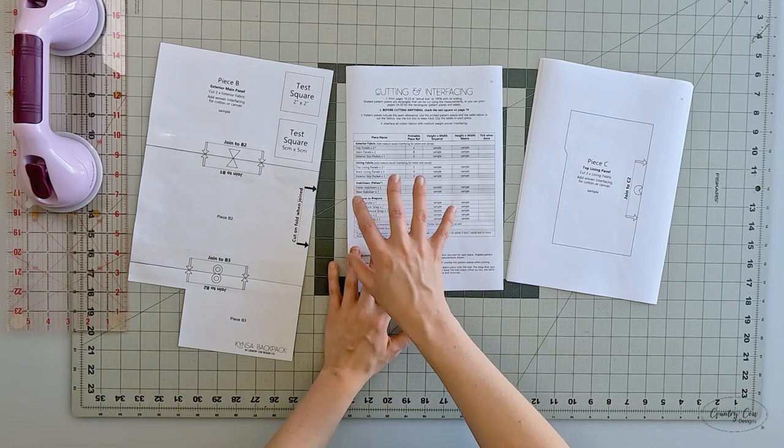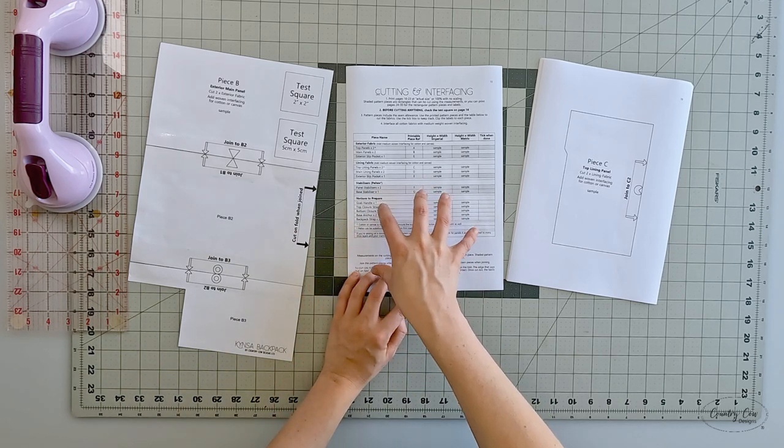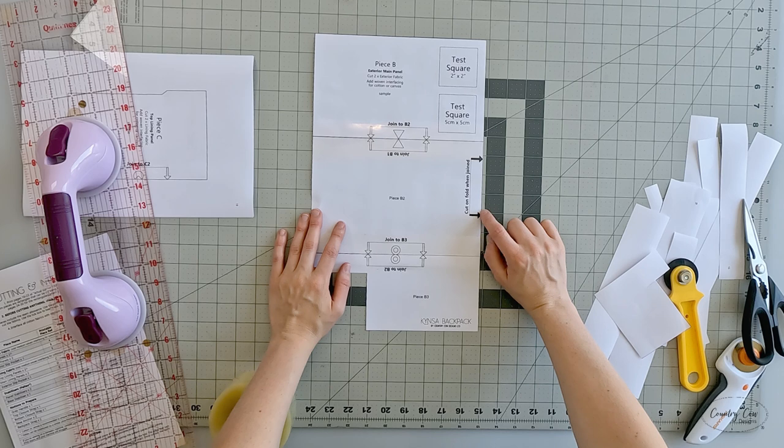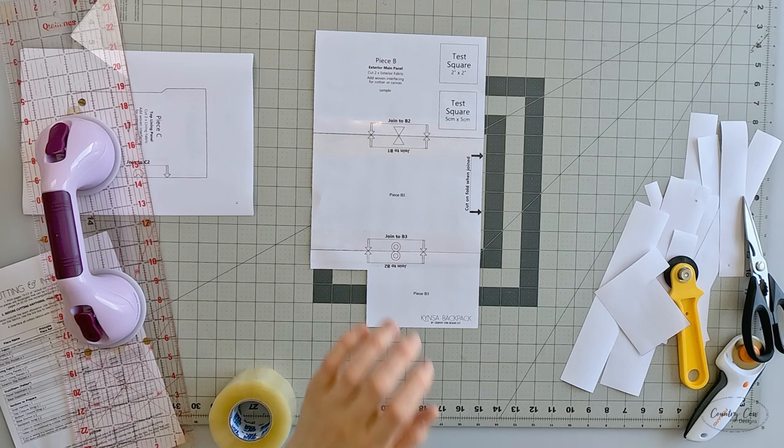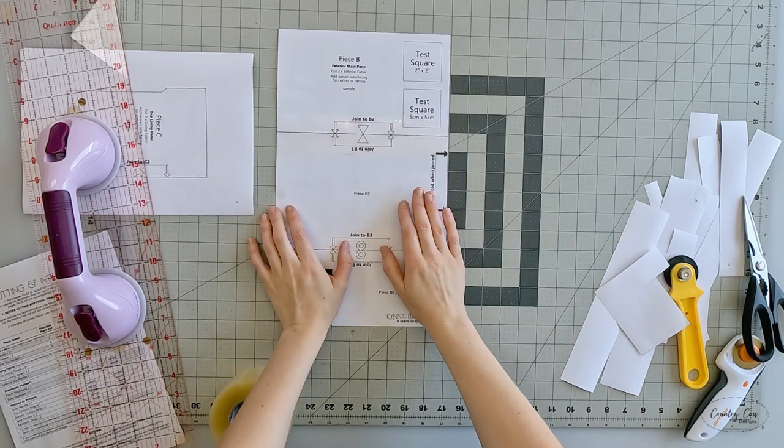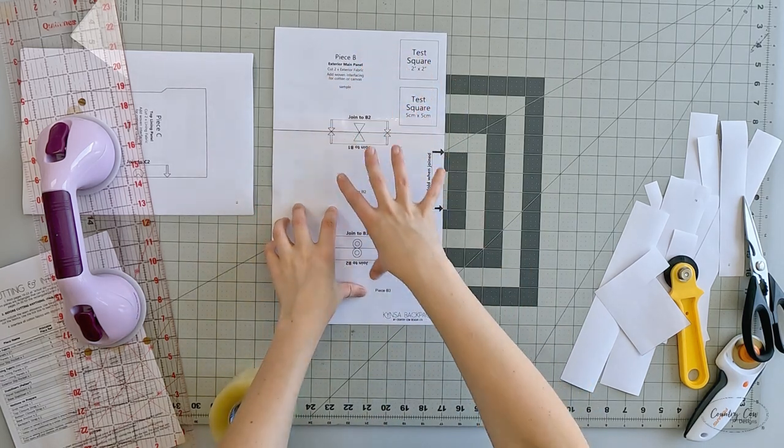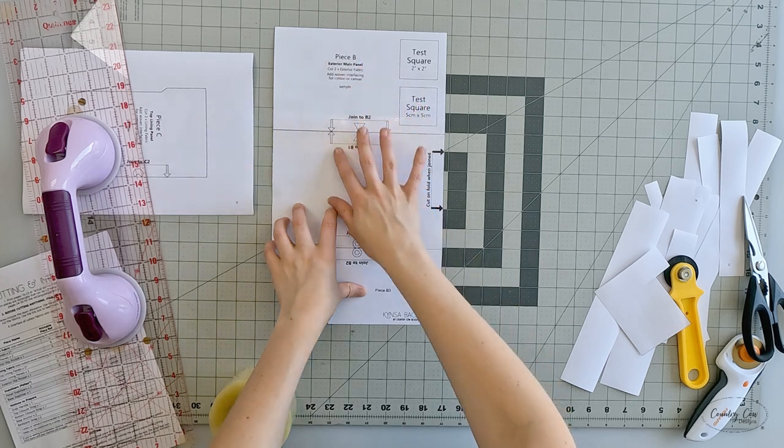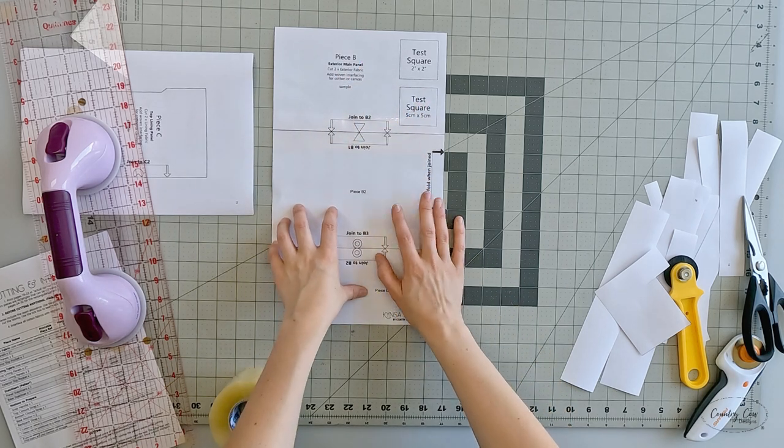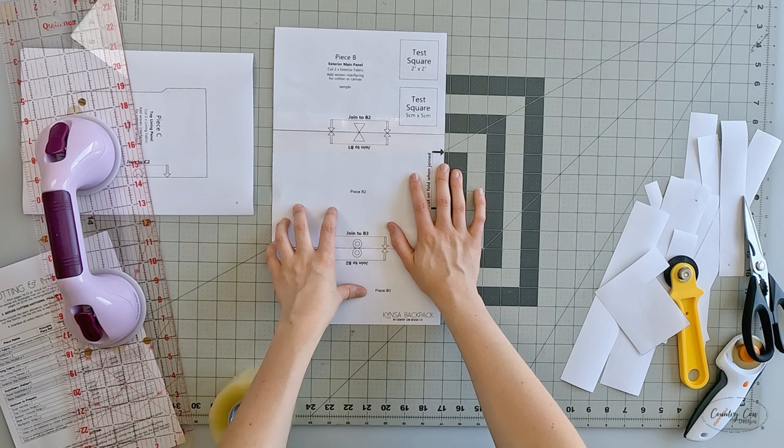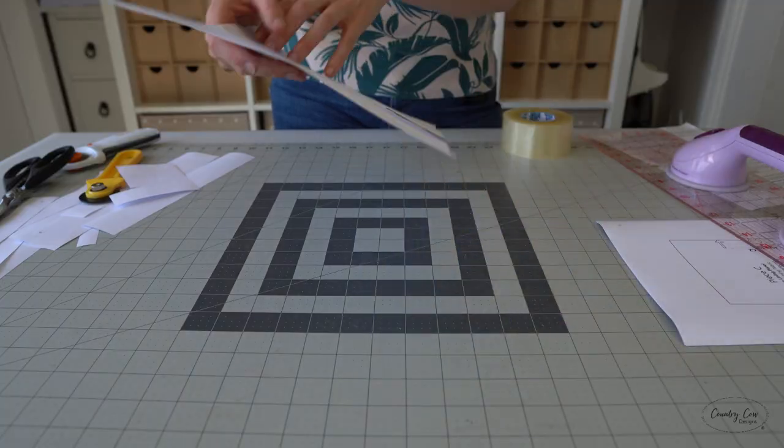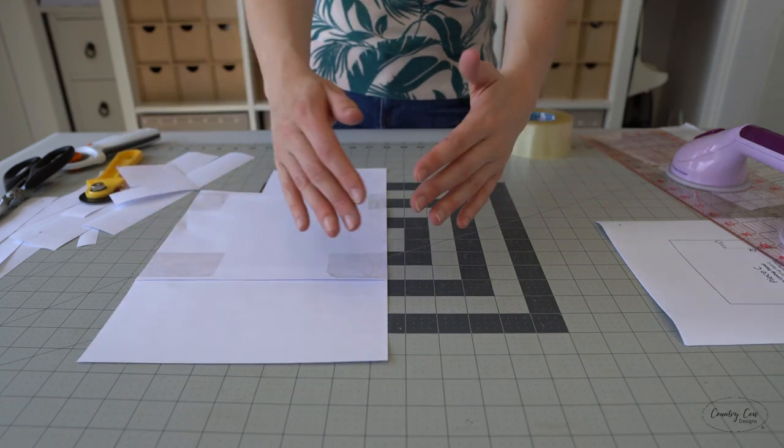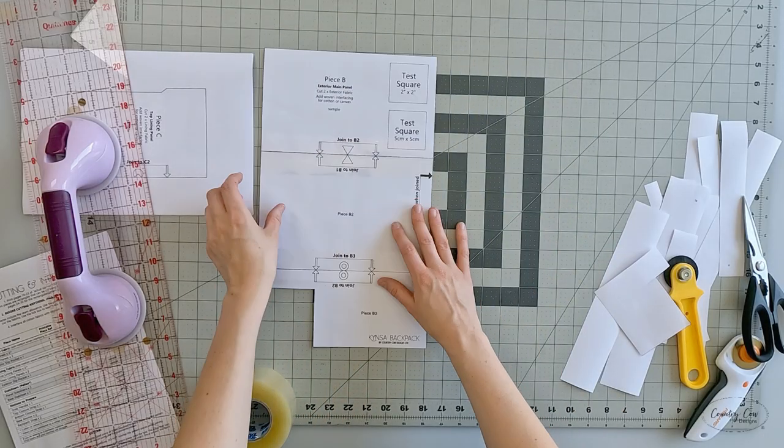Now it mentions cut on fold when joined. What this means is that we really need this piece of fabric to be twice the size. There's two ways that you can do this. You can cut it on the fold, or you could print this again, flip it over, and then join it to the original piece. So I'm just going to show you how we would cut on fold.